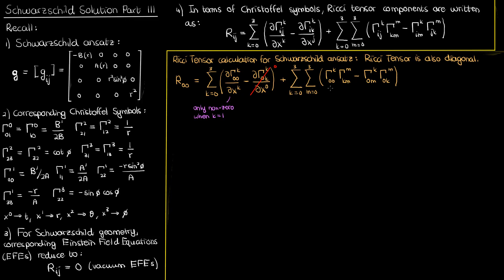The third term in our R₀₀ equation is only non-zero when k equals one, but when k equals one, any value of m applies for the second Christoffel symbol, so we still have to sum over m from zero to three. In the fourth term, the only non-zero Christoffel symbol for k equals zero is when m equals one, and for k equals one the only non-zero symbol is when m equals zero. The other two values of k give zero. Let's now rewrite our expression for R₀₀ after applying these simplifications.